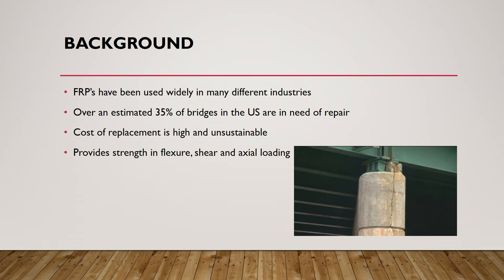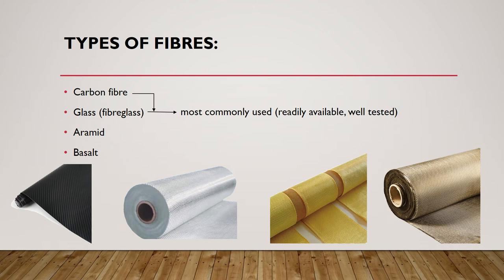FRP creates a better solution for deteriorating structures with its relatively inexpensive cost to provide concrete strengthening in flexure, shear, and axial loading. Typically used materials for the fibres in an FRP composite include carbon, glass, aramid, and basalt, with carbon and glass being more common due to well-developed testing and available resources.